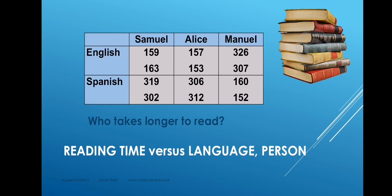We have replication in the cells because each person read more than once in each language. Looking at the numbers in the table gives some idea about what's happening in this process. Someone might ask what they think is a simple question: who takes longer to read? But if you look at the data in the table, you realise the answer is not simple. The answer begins with: it depends on the language.